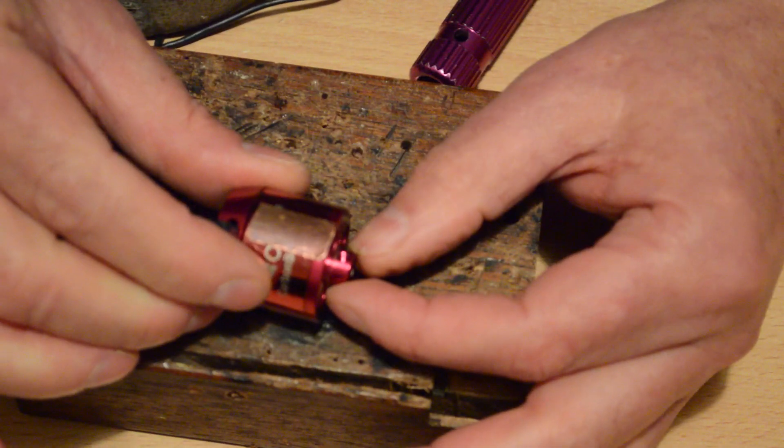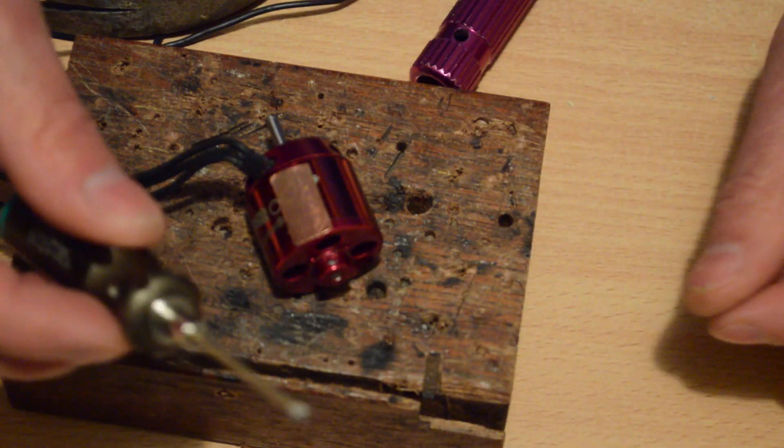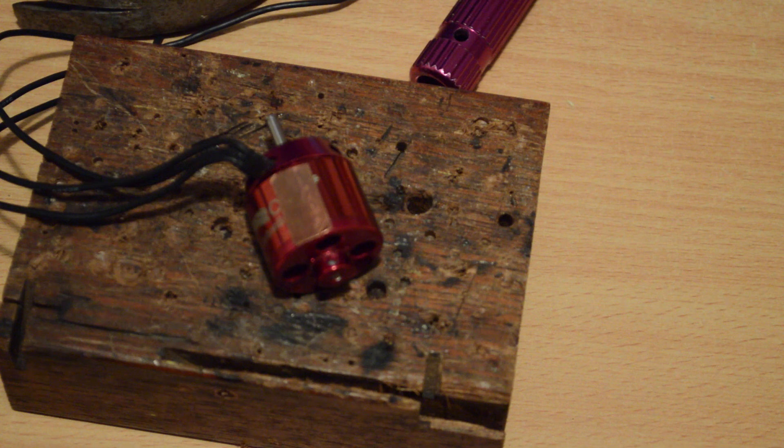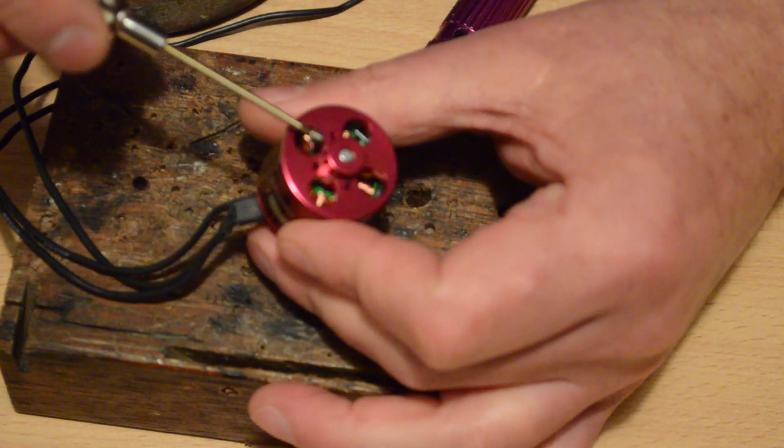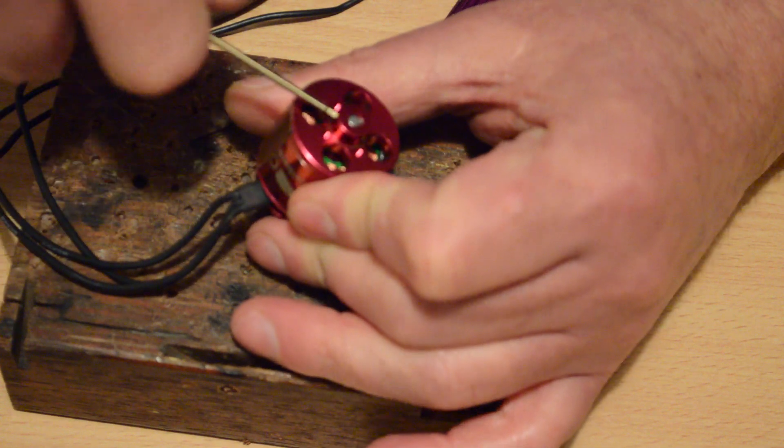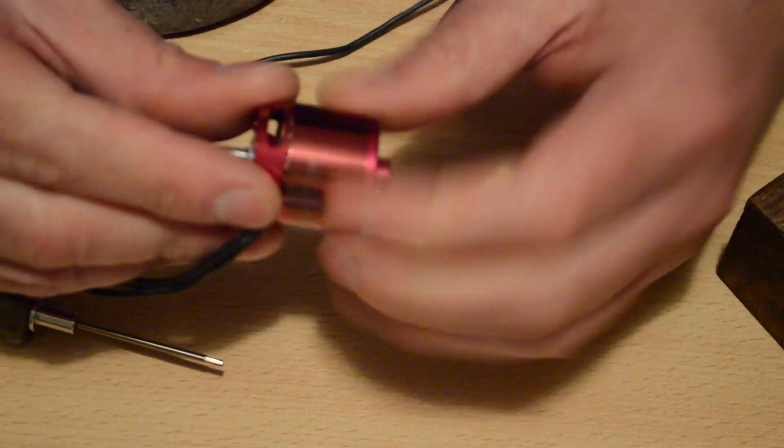And if I look through my grub shaft hole I can actually see the flat of the motor. Grab my grub screw back, dot of Loctite, grub screw back in. One fixed motor.